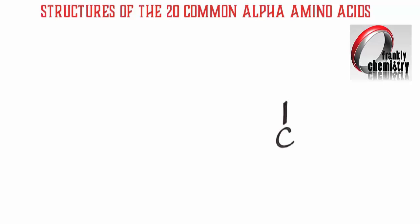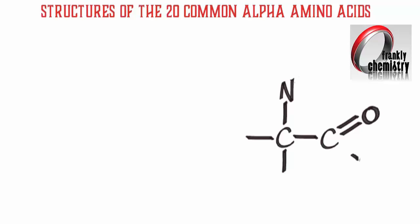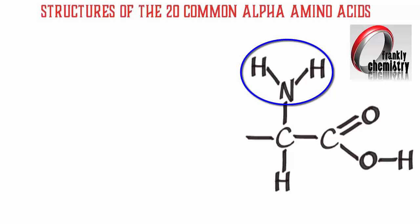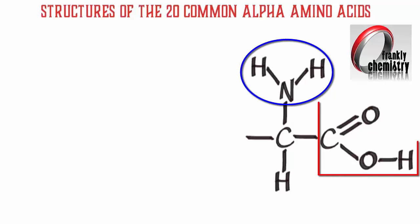Let's begin with the part of the molecule that's common to all 20 amino acids. We have an amino group, NH2, and a carboxylic acid group, or carboxyl group, COOH. And that's where amino acids get their name — amino from the amino group, and acid from the carboxylic acid group.